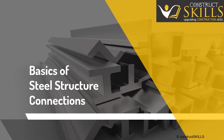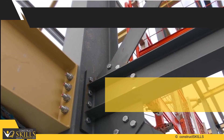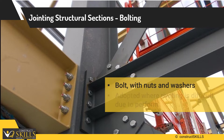Basics of Structural Steel Connections. Joining structural members by bolting: in it, bolt with nuts and washer is used. This connection is done when riveting is difficult to perform.